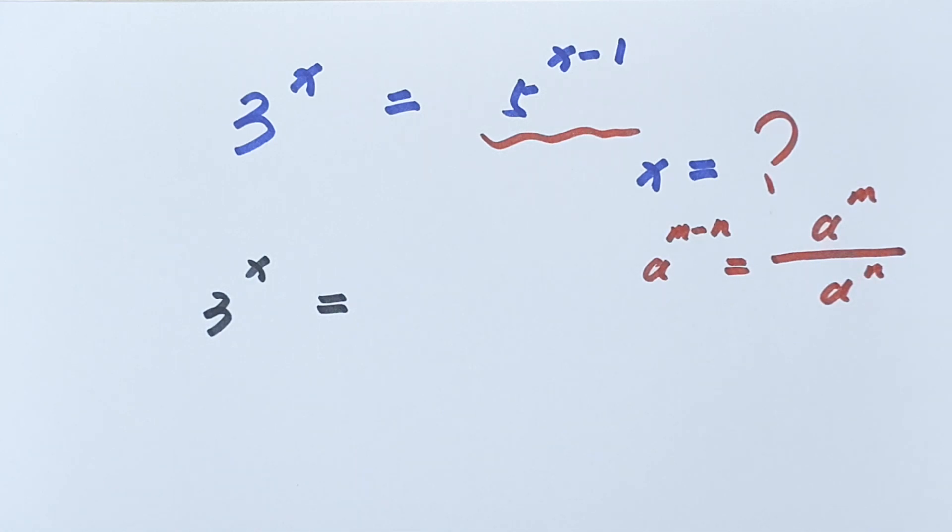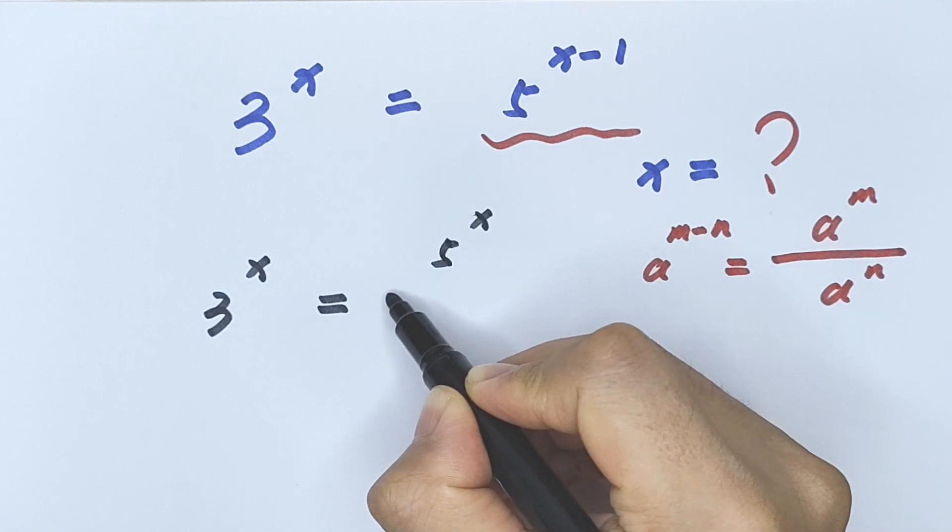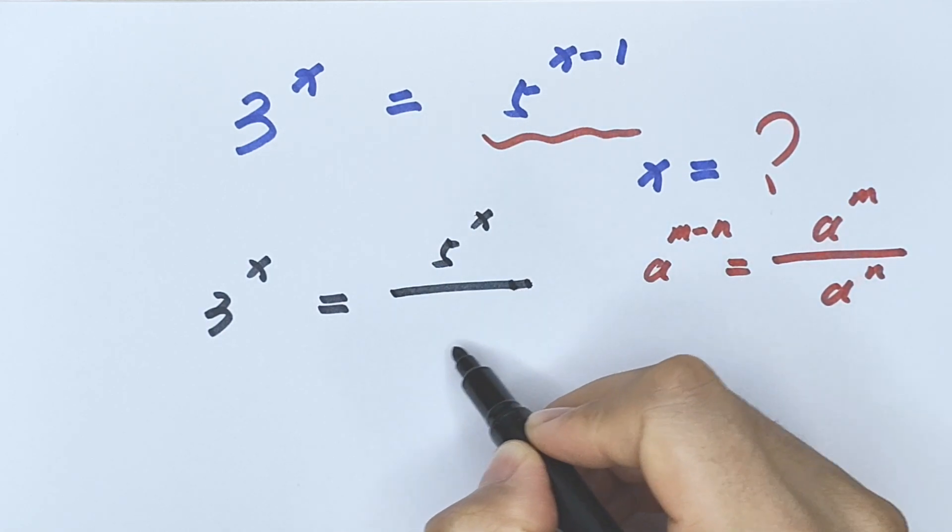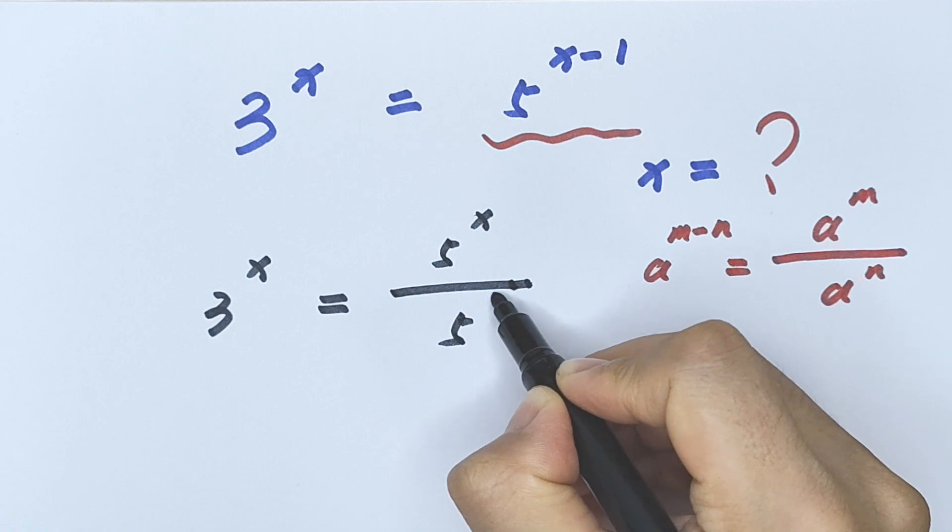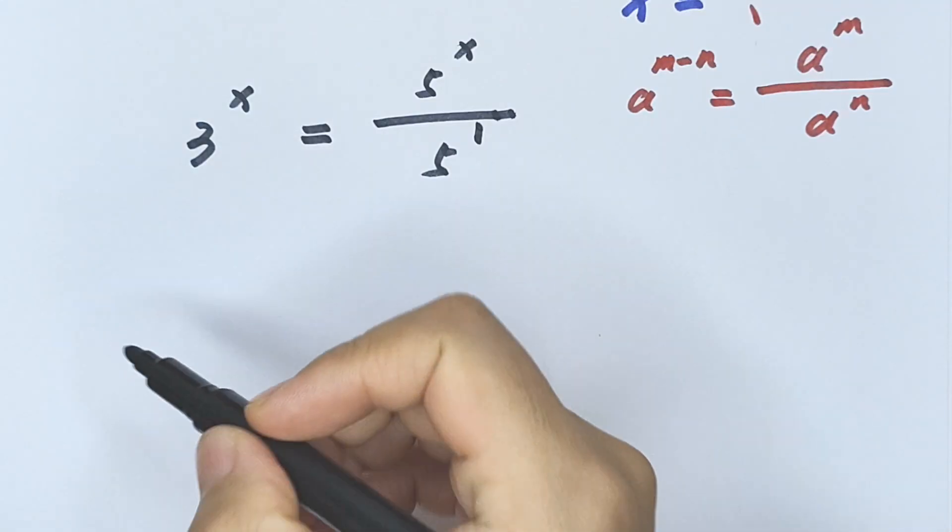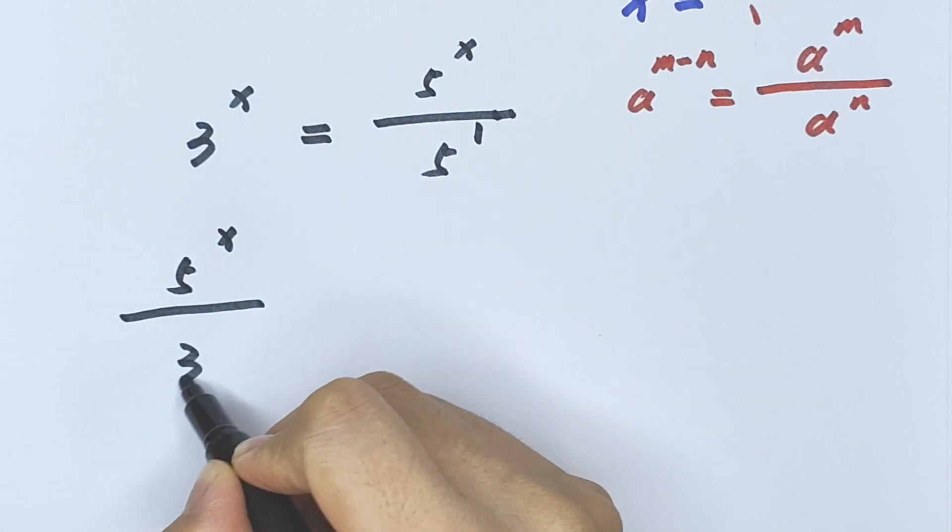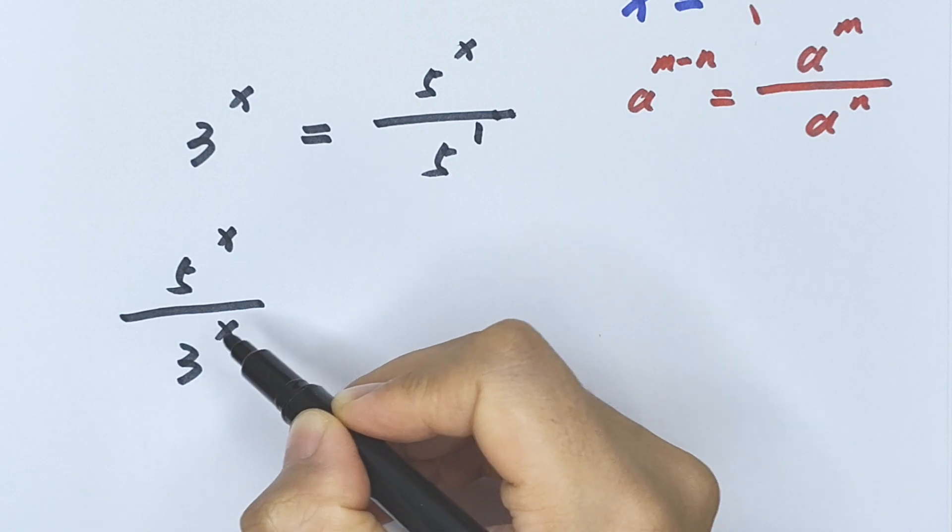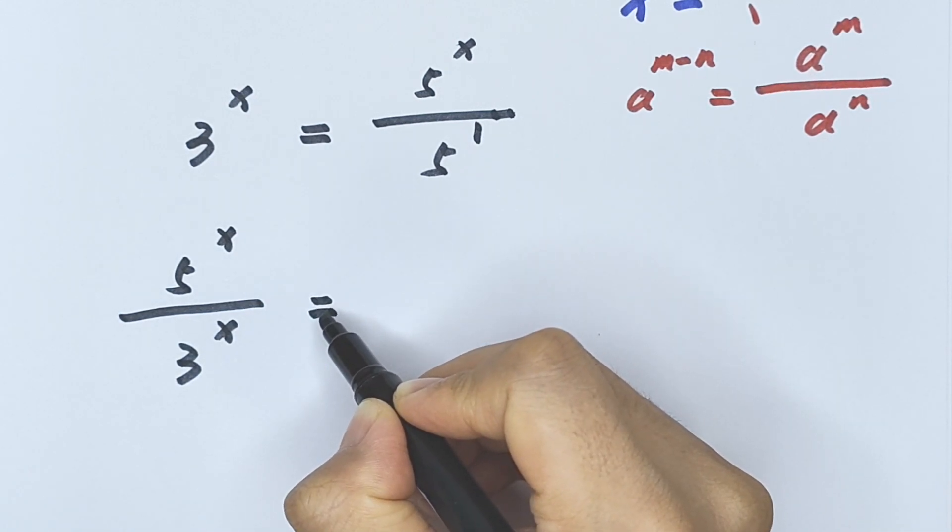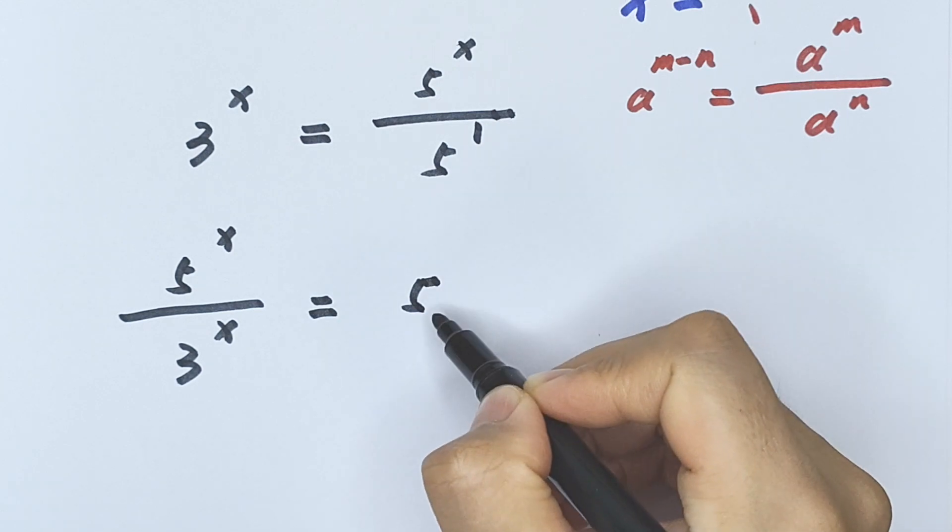So the right side is 5 to the power of x divided by 5 to the power of 1. Now our equation can be written as 5 to the power of x divided by 3 to the power of x equals 5 to the power of 1, which is the same as 5.